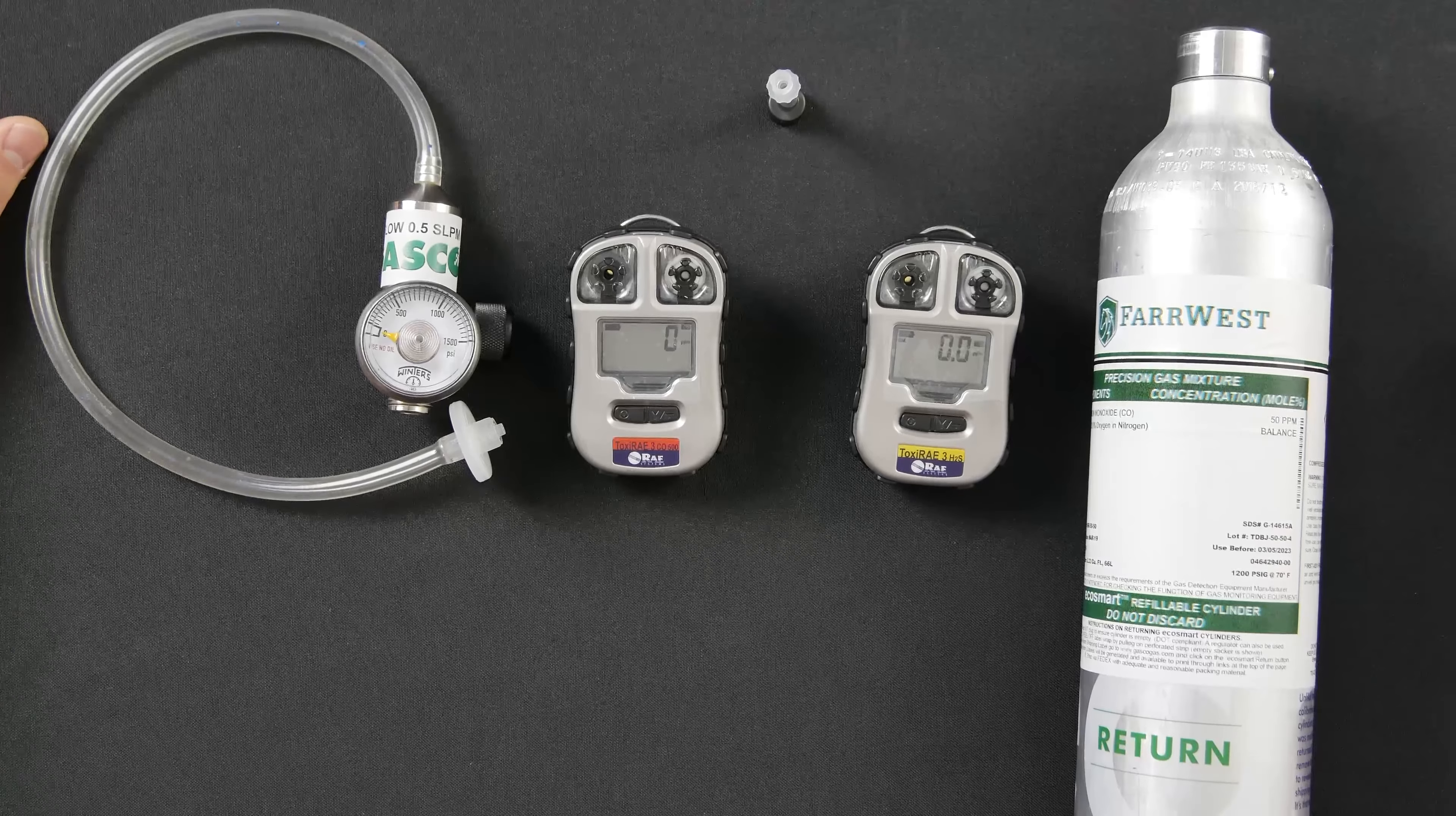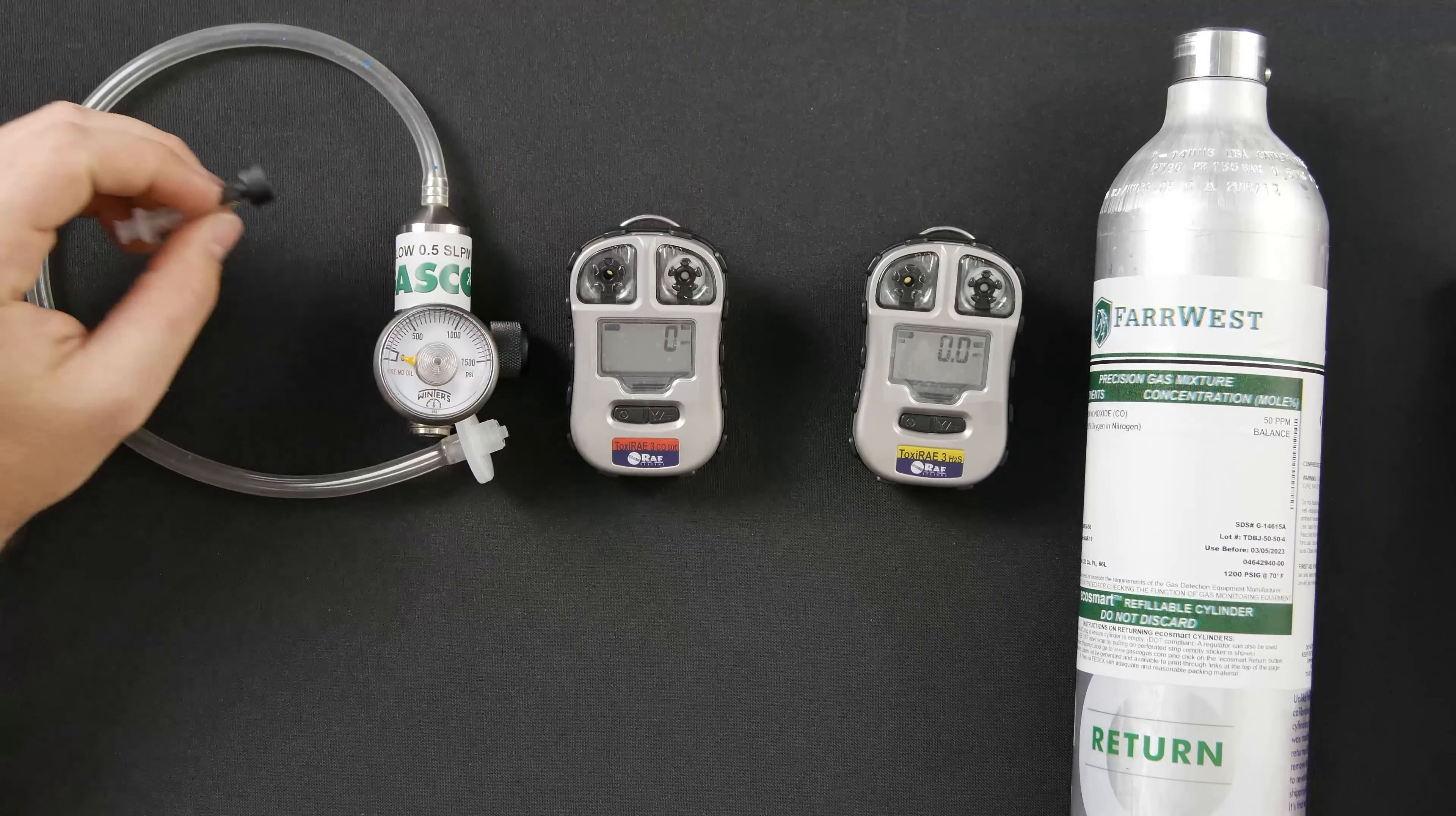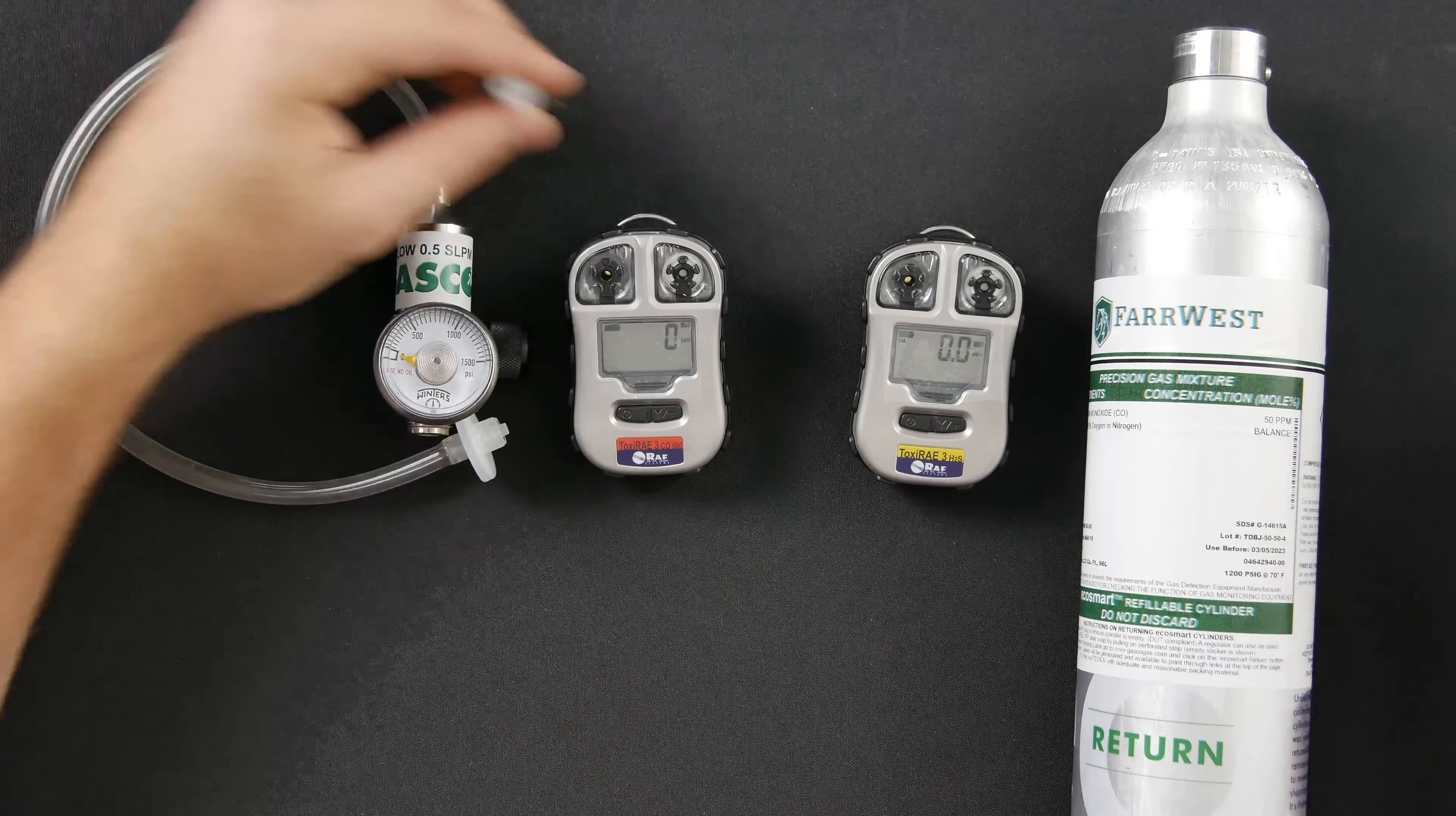To do a SPAN calibration on your CO meter, you will need 50 ppm of CO, a 0.5 regulator, and the adapter. The adapter goes over the sensor, which is located on the right. What is located on the left is actually your buzzer.